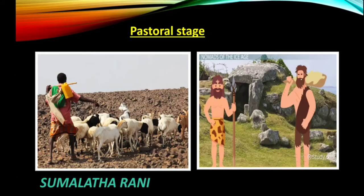The pastoral stage followed. During this stage, people learnt the domestication of animals. In the beginning, cattle, sheep, and goats were reared. These animals provided food to eat and skins to cover their bodies. People moved from one place to another in search of grasslands. Though man had reached a higher level of development, commerce did not exist in this stage.